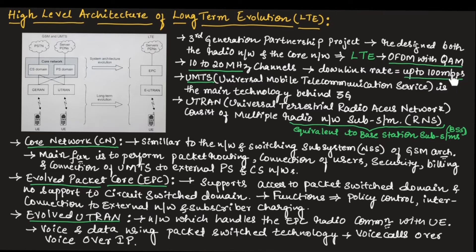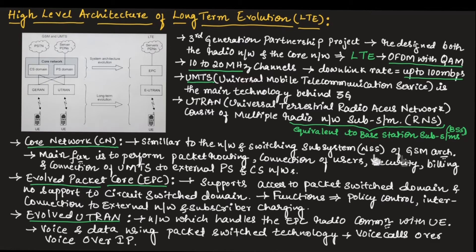The downlink rate is greater than previous generations. UMTS, Universal Mobile Telecommunication Service, is the main technology behind the third generation. UTRAN, Universal Terrestrial Radio Access Network, consists of multiple Radio Network Subsystems, referred to as RNS. This Radio Network Subsystem is equivalent to the Base Station Subsystem. The core network is similar to the Network and Switching Subsystem of GSM architecture.